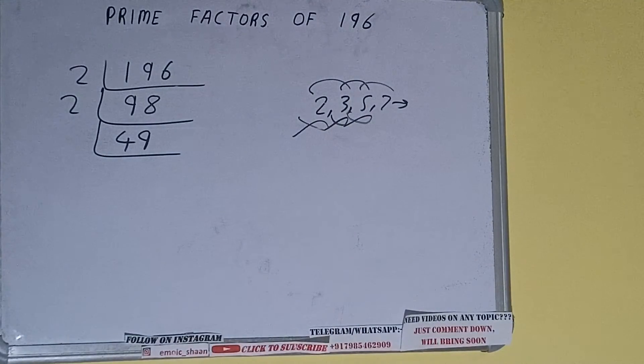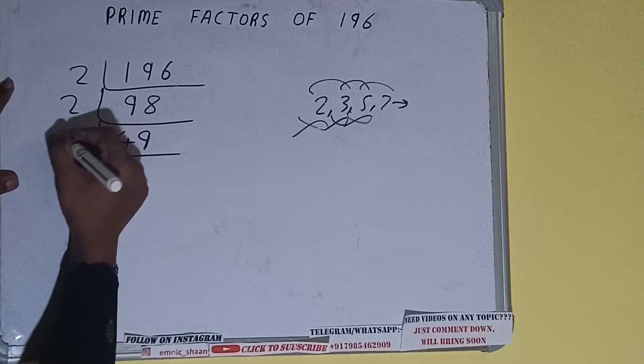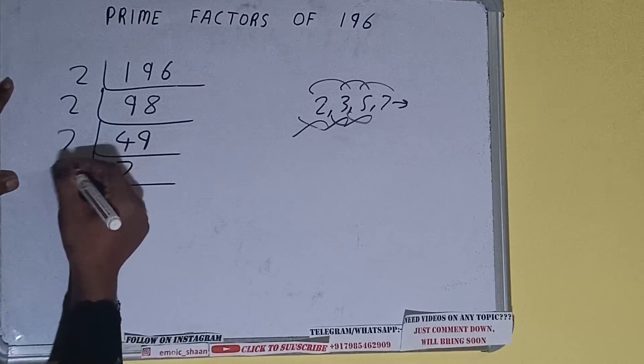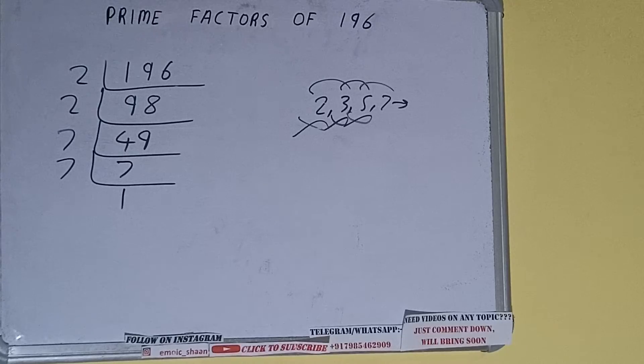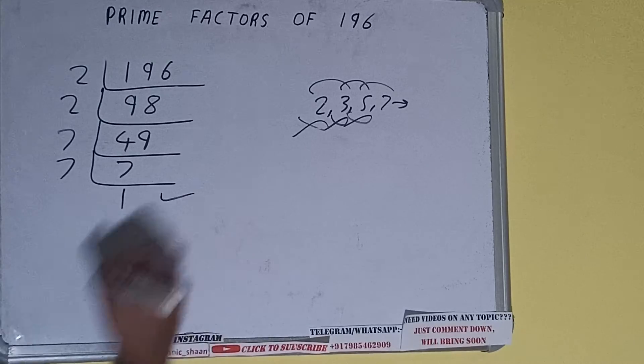Let's check with seven. With seven it is divisible, so let's divide and we'll be having seven. Seven is again divisible by seven, we'll be having one. Once we get one, we need to stop.